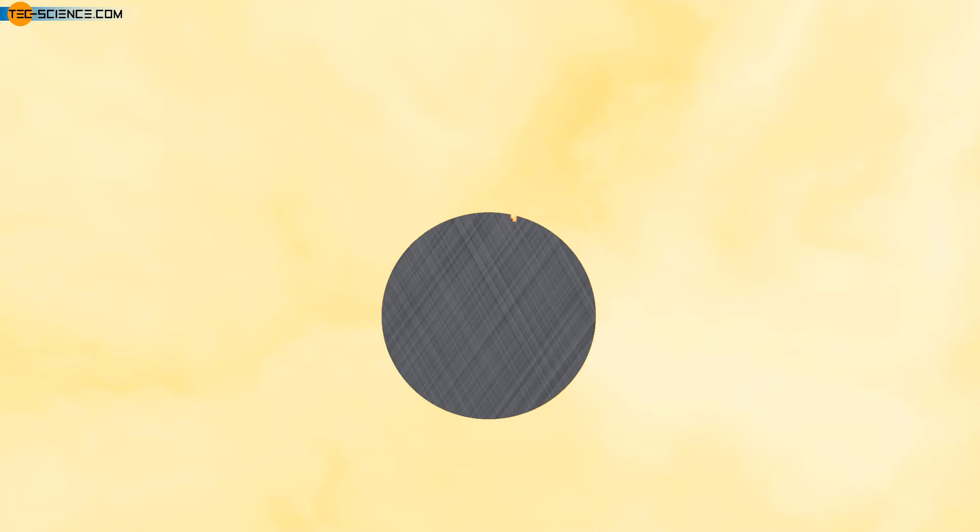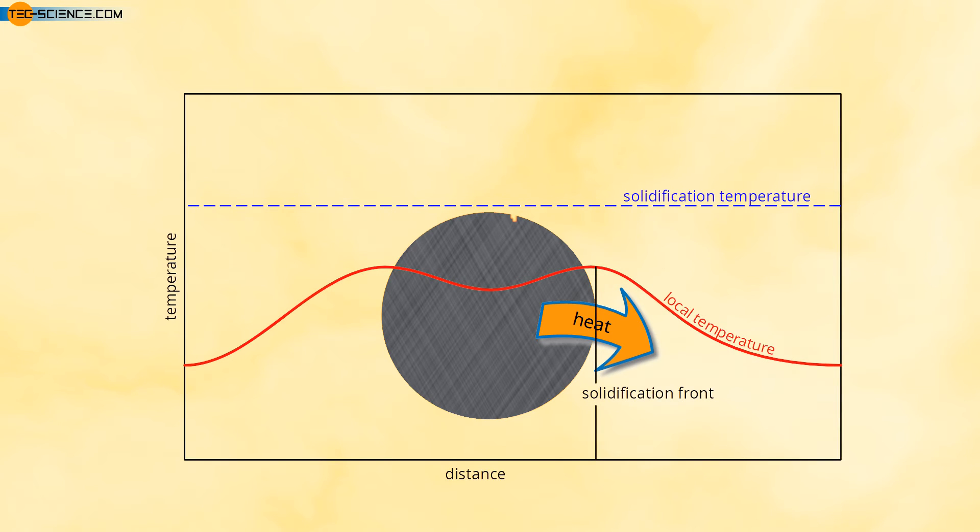Let us now take a closer look at dendritic crystal growth. Here, heat is not dissipated via the crystal as in polygonal crystal growth, but through the melt. This is the case when the melt is severely supercooled and the nucleus forms in the middle of the melt. A negative temperature gradient is obtained in the direction of the melt.